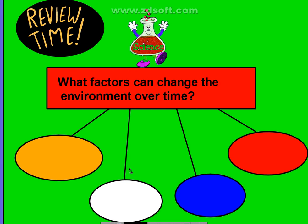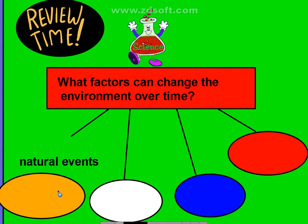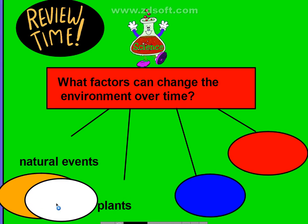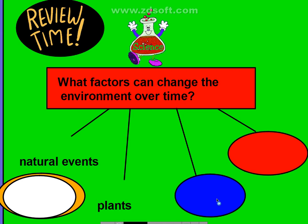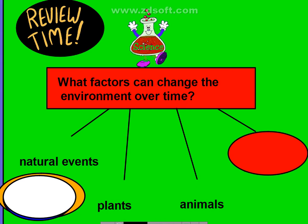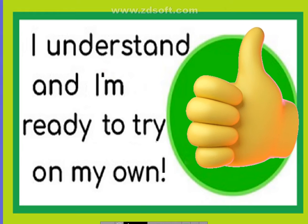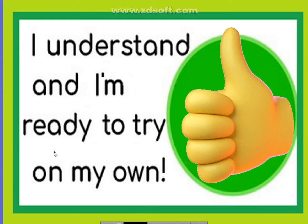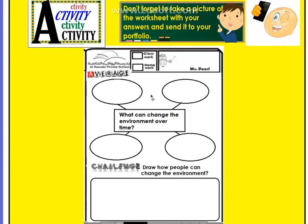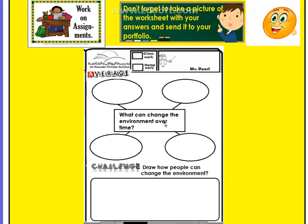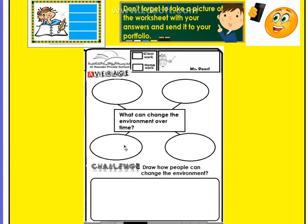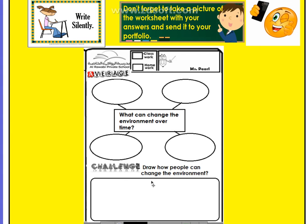Review time! What factors can change the environment over time? Very good — natural events. Another factor is plants. And also animals. And the last one — very good — people! I think you are ready to do this on your own. What can change the environment over time? Write your answer inside the circles. For the challenge part, draw how people can change the environment.